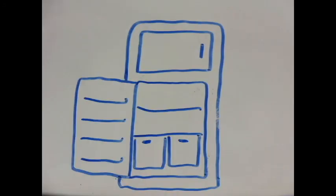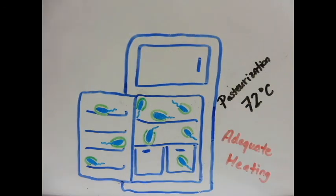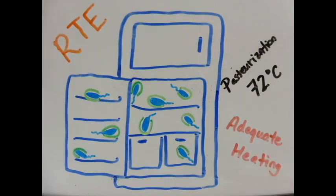Listeria can grow at refrigeration temperatures and is only killed by pasteurization and adequate heating, making ready-to-eat foods highly susceptible as vehicles for Listeria.